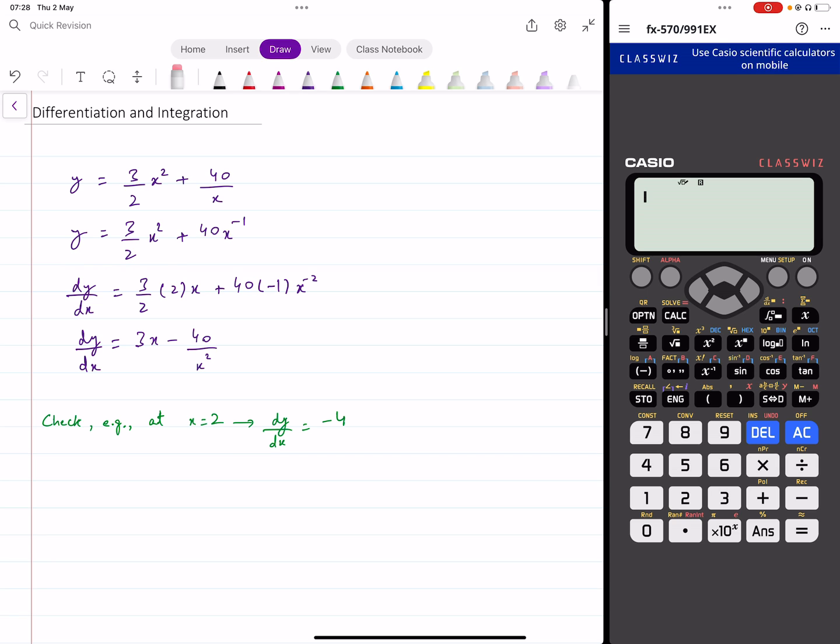Now what you can do in your calculator is if you look at the top right corner the second button after pressing shift you can press this button to access that differentiation function. Now you put your function there 3 divided by 2 multiplied by x squared plus 40 divided by x. That's your function. But now the problem is the calculator also asks you for a value of x at which you want the derivative.